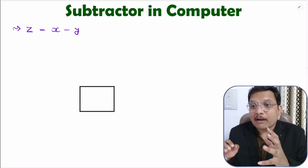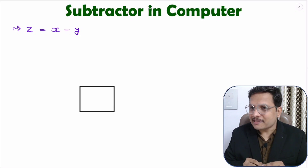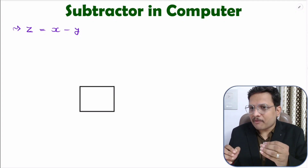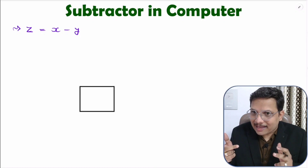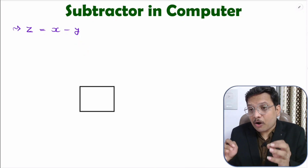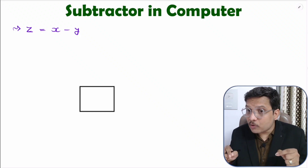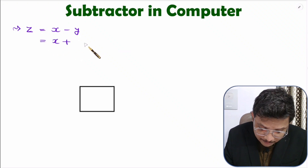Now, if you want to understand subtraction in computer's language, first you need to know there is no such thing as a minus operation happening inside a computer. So how do we perform subtraction? We perform it using addition only. You perform x minus y by computing x plus negative y. In a computer, the negative of y is represented using two's complement of y. So x minus y is performed as x plus two's complement of y.